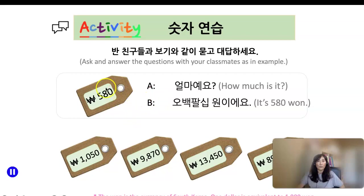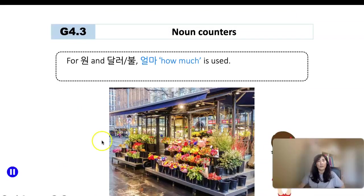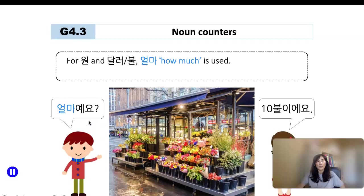When you go to Korea, you'll see a lot of price tags using Korean numbers. 'How much is it?' in Korean is 얼마에요? The Korean currency is 원. For example, 580원이에요. 얼마에요? 1,050원이에요. 얼마에요? 9,870원이에요. 얼마에요? 13,450원이에요.